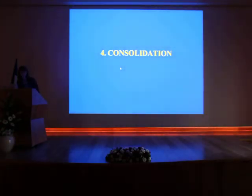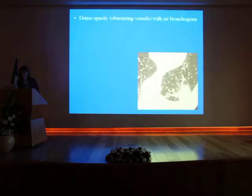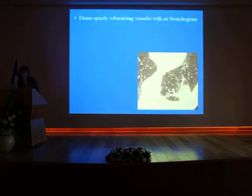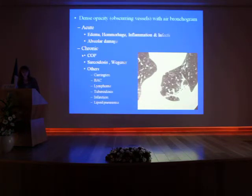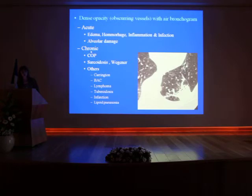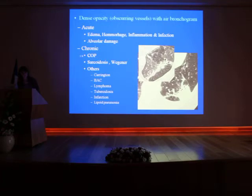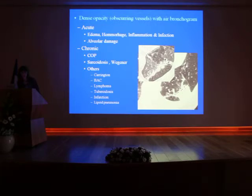The fourth pattern is consolidation. You all know what a consolidation is: it is a dense opacity obscuring the vessels with air bronchograms. It depends on whether the feature is acute or chronic. I will just insist on this feature — cryptogenic organizing pneumonia — where the consolidation has a very typical appearance: it is a linear consolidation which is parallel to the pleural surface.